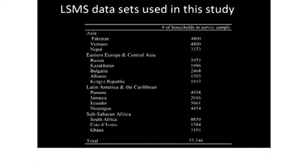It's important to emphasize that the LSMS data used in these analyses are not a random sample of households around the world — they're only available for some countries. In Asia, it's Pakistan, Vietnam, and Nepal. There's a heavy concentration of countries in Eastern Europe and Central Asia, which are over-represented in this data set. And in Africa, it's just South Africa, Cote d'Ivoire, and Ghana.